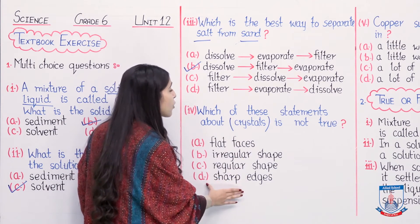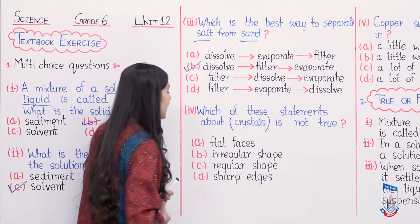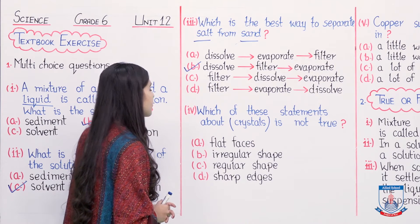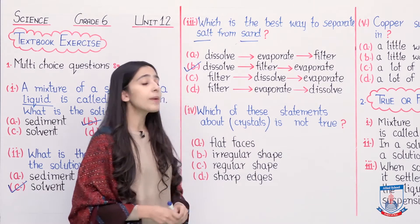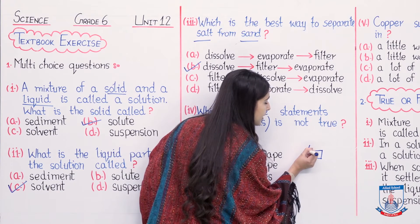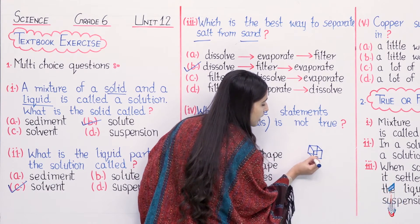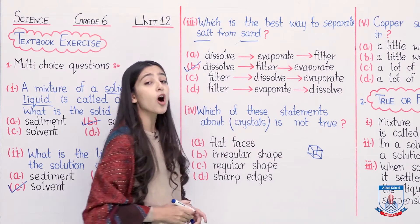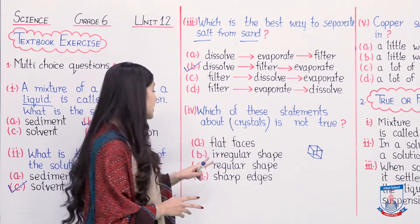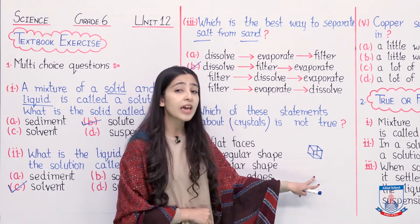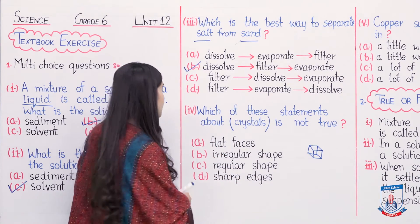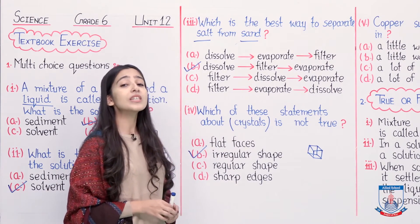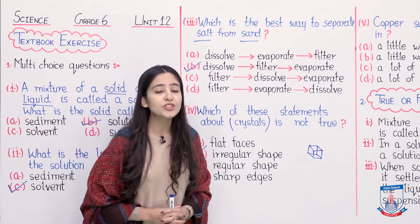The options are: A is flat faces, B is irregular shape, C is regular shape, and D is sharp edges. The crystal looks like a cuboid, so it has flat faces — that is true. It has sharp edges — that is true. Its shape is specific and regular — that is true. Irregular shape is obviously not a characteristic of a crystal, because crystals have a specific, regular shape. So the correct option is B, irregular shape, as this is the only option that is not true about crystals.